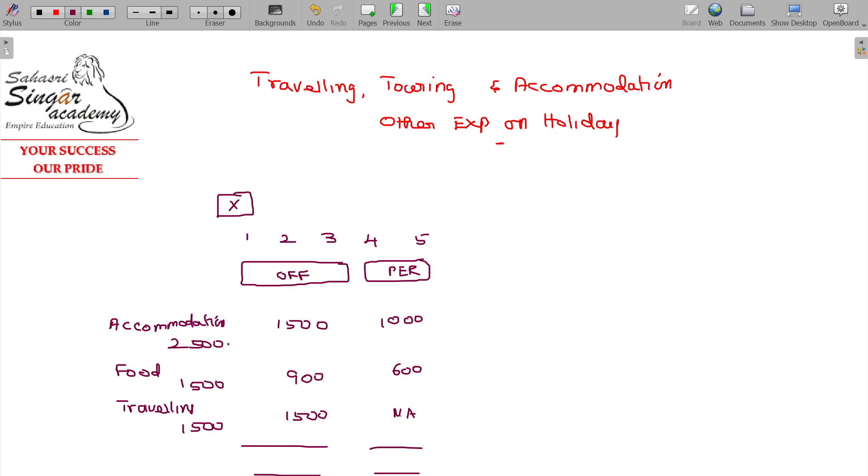This will be completely considered as official. So $3,900 being the official expenses, does it matter? This $1,600 being the perquisites value. If this amount is recovered, no problem. Only $1,000 recovered, balance $600 is the perquisites value. Nothing is recovered, so $2,600 will be the perquisites value.